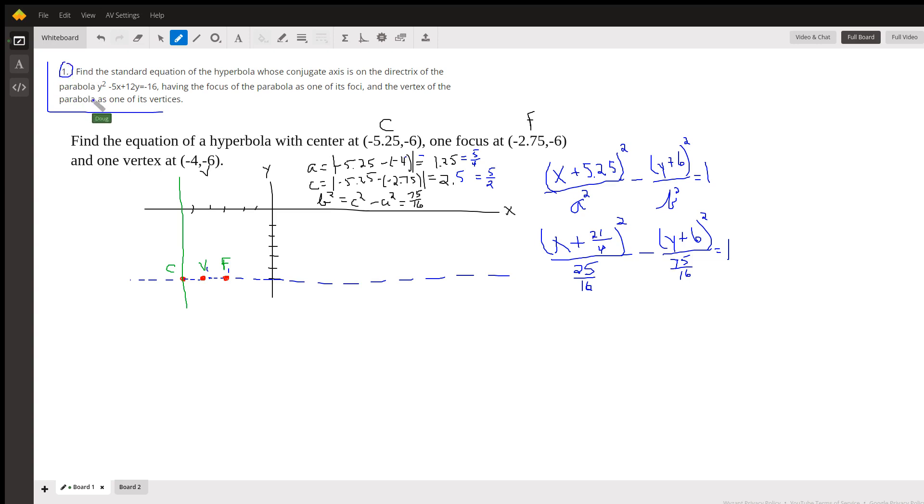You're given the equation of a parabola and asked to come up with the equation of a hyperbola that has a conjugate axis that's the same as the directrix of the parabola and having one of the foci of the hyperbola equal to the focus of the parabola. And the vertex of the parabola is one of the vertices of the hyperbola.